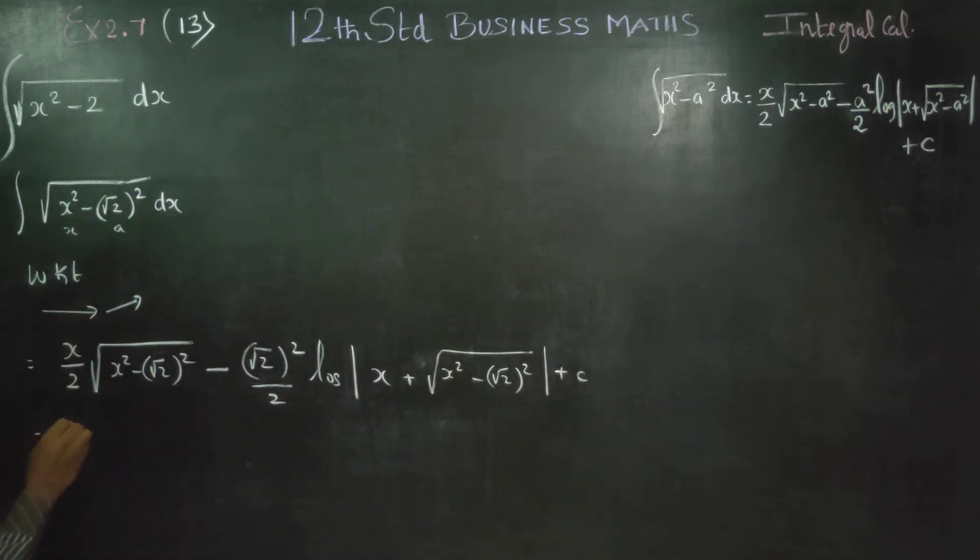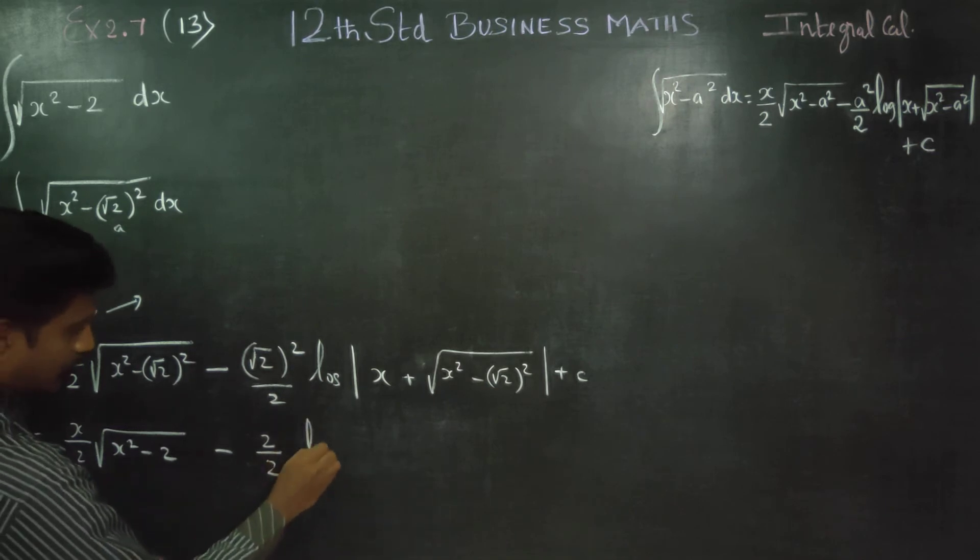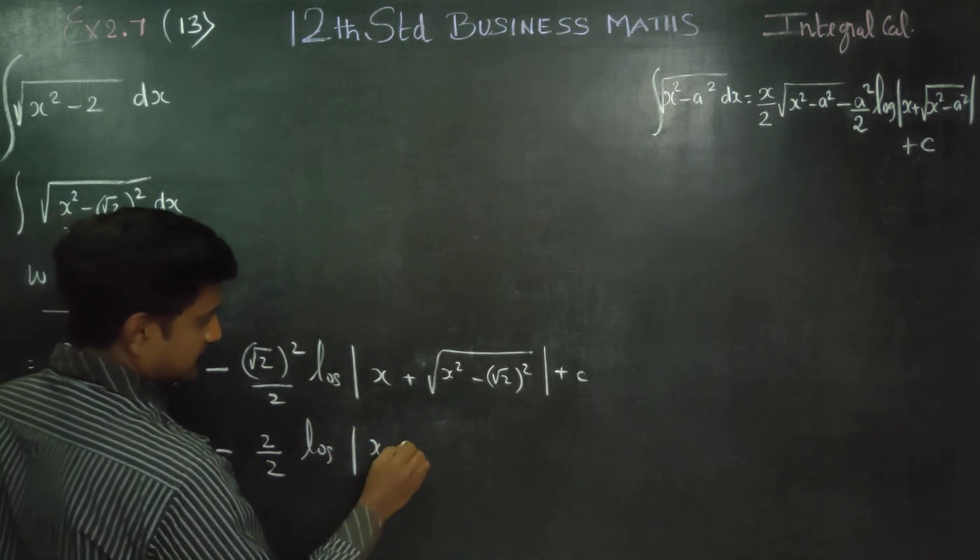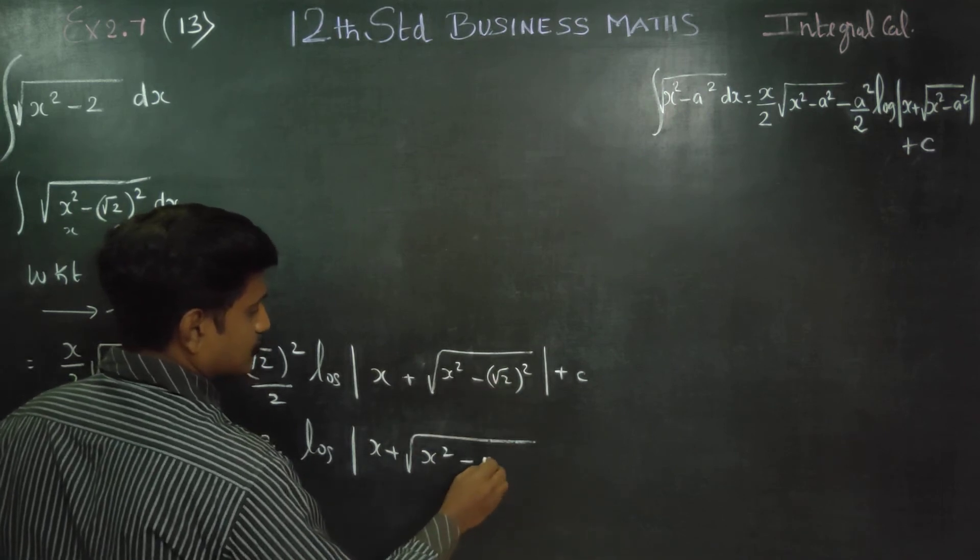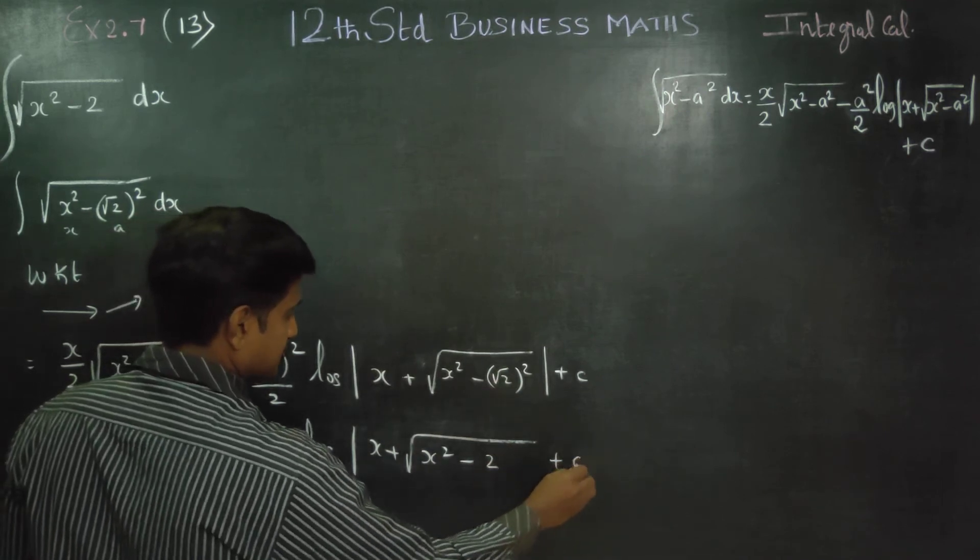When you simplify this, x by 2 root of x square minus 2, root 2 by 2 logarithm of x plus square root of x square minus root 2, plus c.